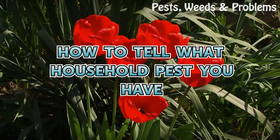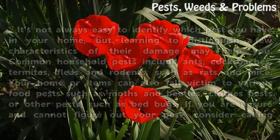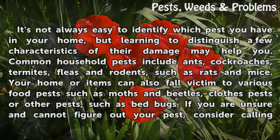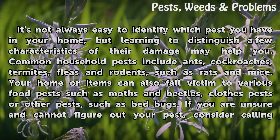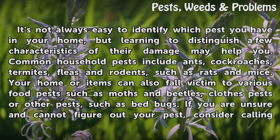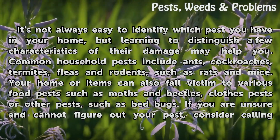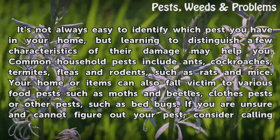How to Tell What Household Pest You Have. It's not always easy to identify which pest you have in your home, but learning to distinguish a few characteristics of their damage may help you. Common household pests include ants, cockroaches, termites, fleas, and rodents such as rats and mice.